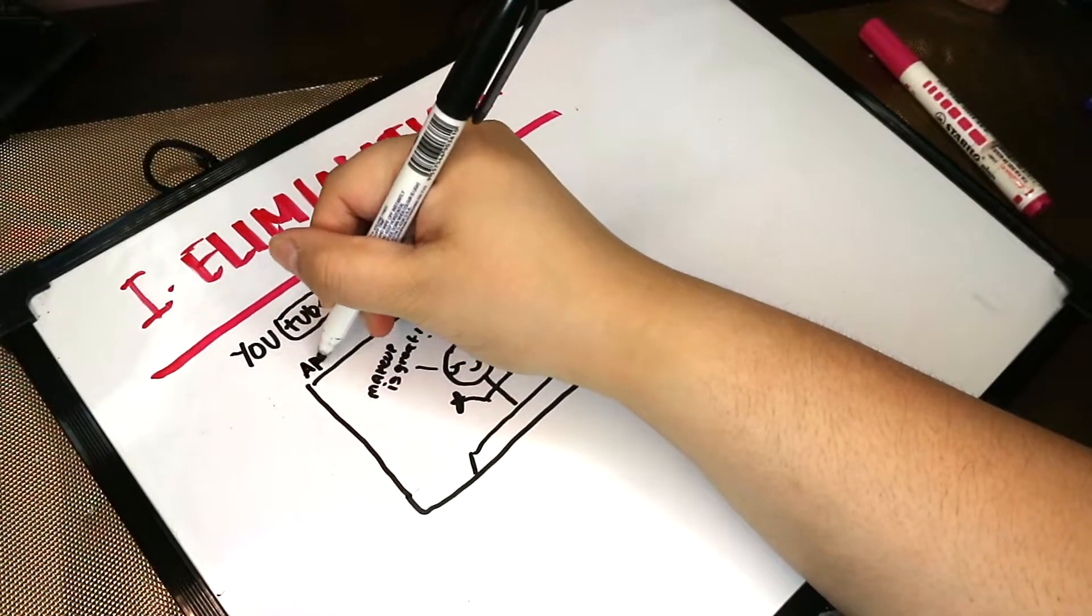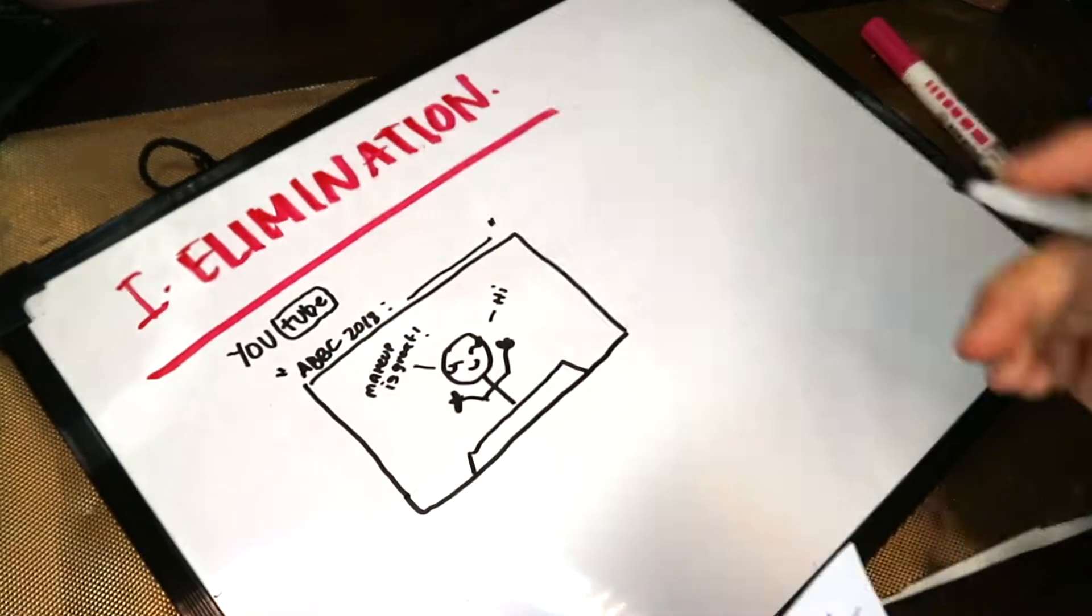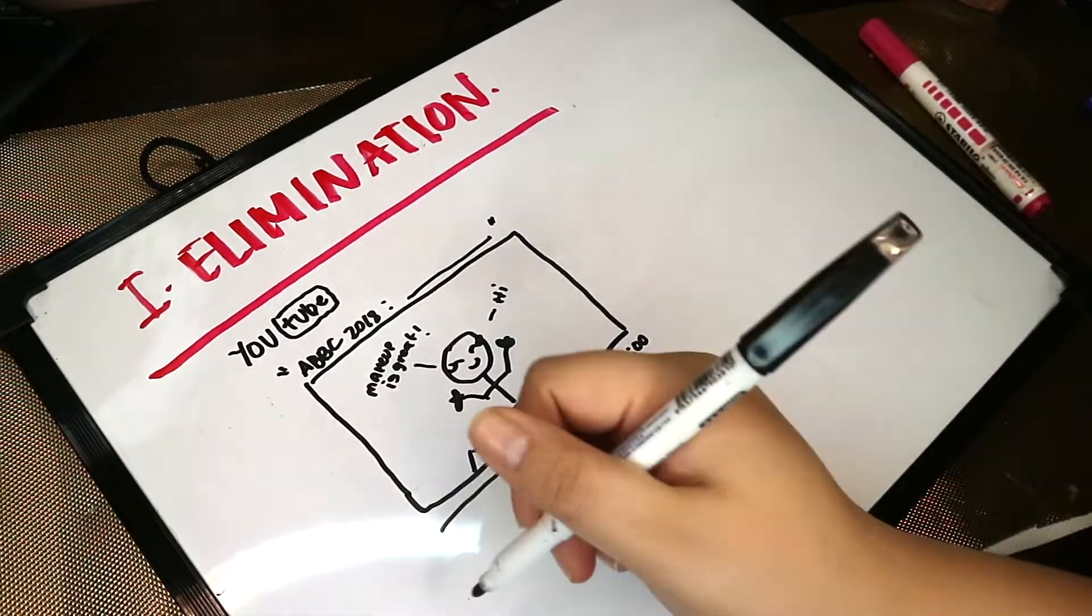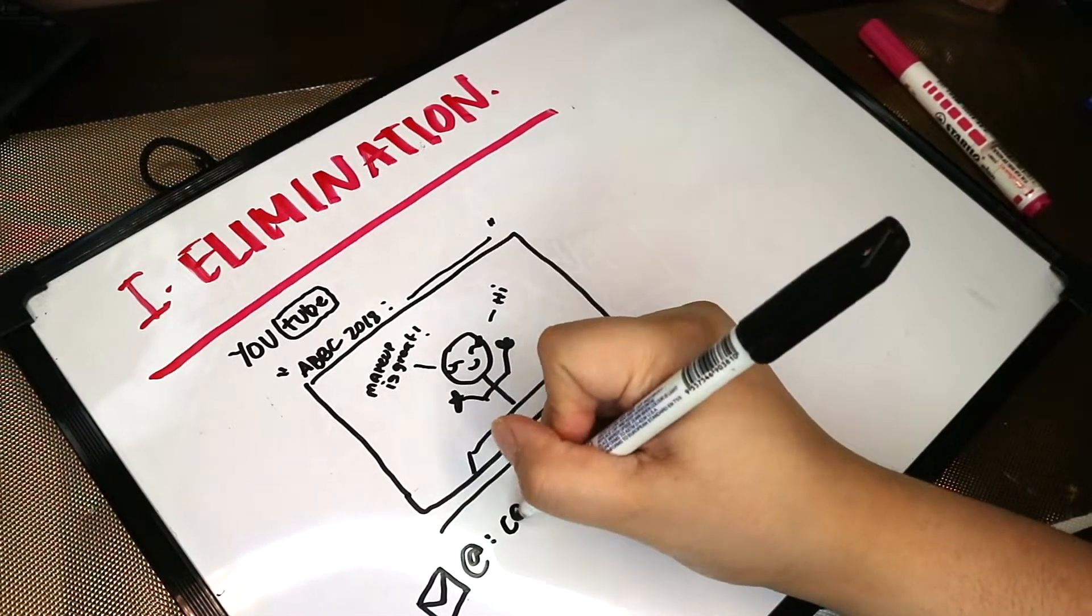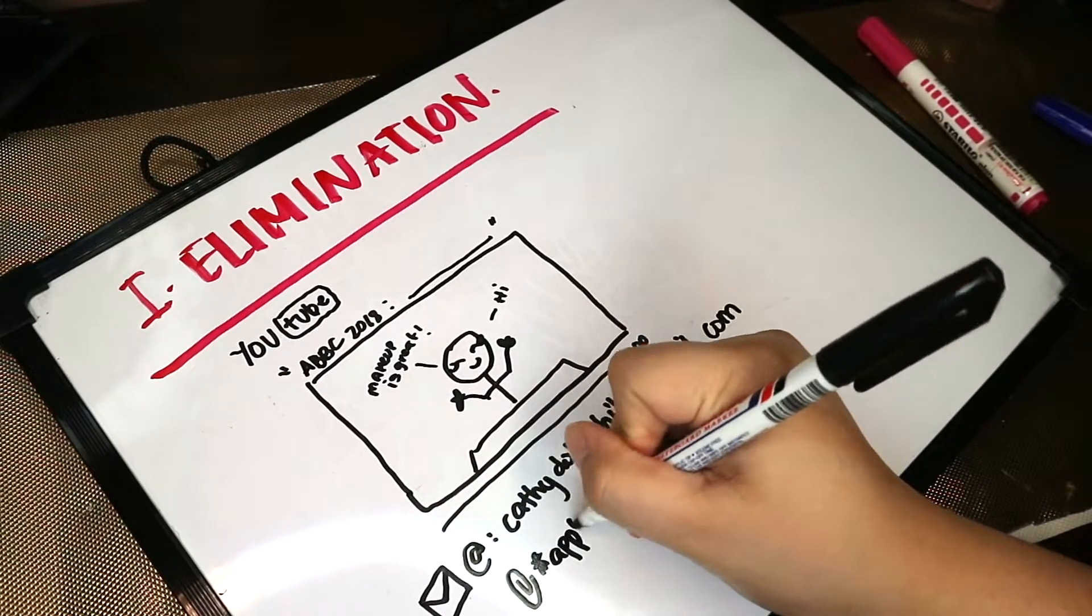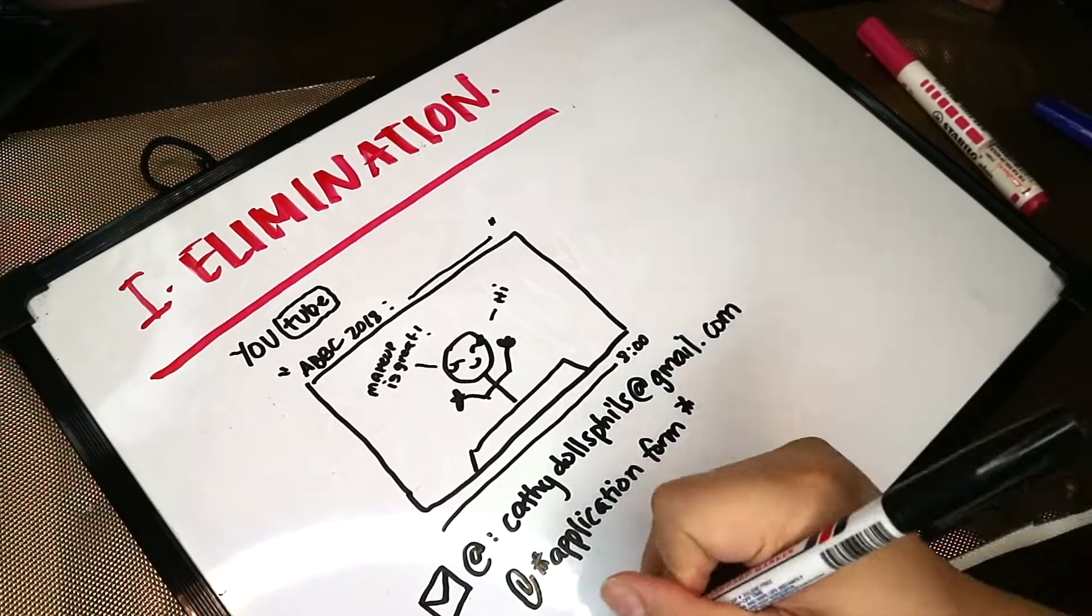Just make sure that it is titled ABBC 2018 with your title entry and it is only up to 8 minutes maximum. Once it is uploaded, you can email it to CathyDollsFills at gmail.com. Also, don't forget to attach the application form which is down in the description box.